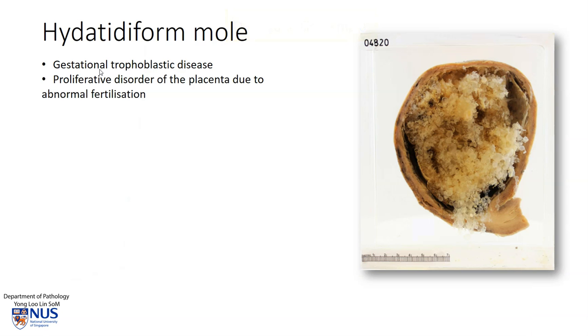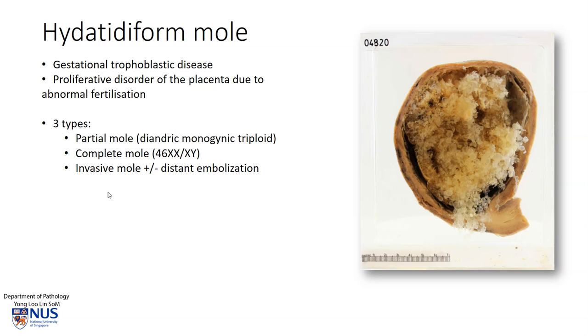Hydatidiform moles form part of the spectrum of gestational trophoblastic disease. Moles are a proliferative disorder of the placenta due to abnormal fertilization. So what we're looking at is actually placental tissue.